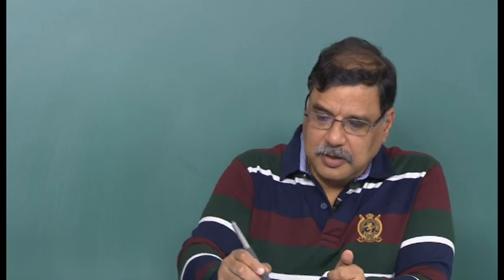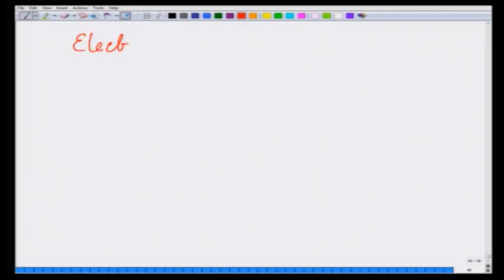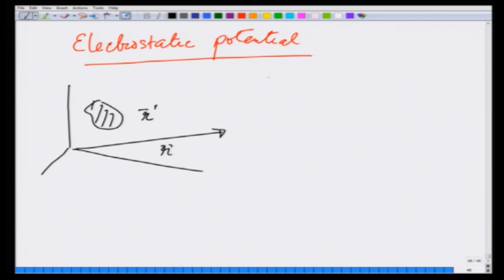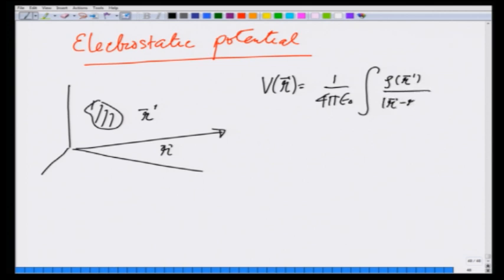We have seen that the electrostatic potential due to a charge distribution is given as follows: if there is a charge distribution at r-prime and I am calculating potential at vector r, then the electrostatic potential V(r) is given as 1 over 4πε₀ times the integral of ρ(r′) over |r − r′| dV′, where dV′ indicates that I am integrating over the r-prime variable, or over the volume where the charge distribution is non-zero.